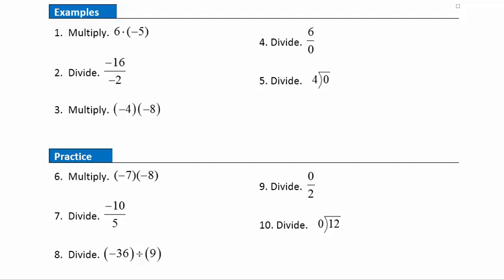Example 1: we're asked to multiply positive 6 times negative 5. Those are different signs, so we know we're going to get a negative answer. Once we get our negative sign down, we focus on 6 times 5, which is 30. So the answer is negative 30.